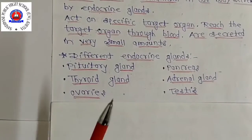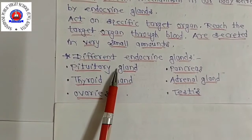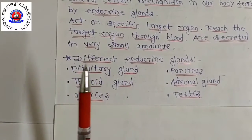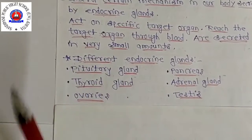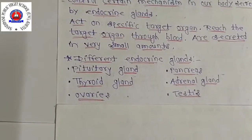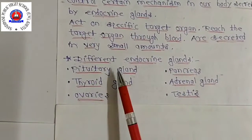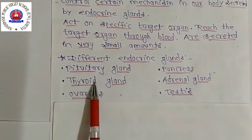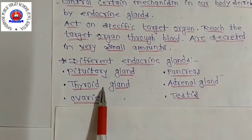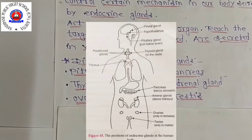The pituitary gland is also called the master gland because it controls and coordinates all the functions of our body. The next gland is the thyroid gland, which is attached to the windpipe in our body.